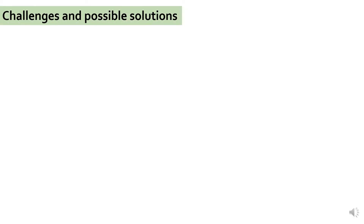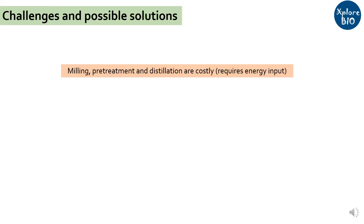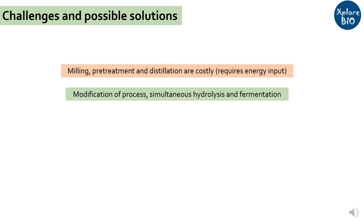Coming to the major challenges in bioethanol production and utilization as biofuel — the first challenge is processing and production cost. The raw material needs to be milled, pretreated, and distilled. All these steps need high energy, which increases the production cost of bioethanol. Modification of the pretreatment process to require lower temperature or reduce the duration of treatment might reduce the cost. Simultaneous hydrolysis and fermentation by yeast can reduce operation time, but that would require a thermo-tolerant strain of yeast that could survive fermentation at about 50 degrees.